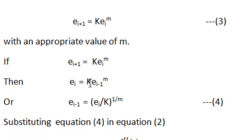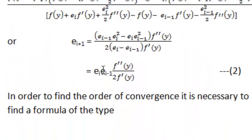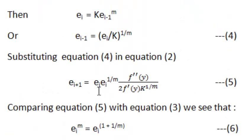From the previous equation we can write E of i minus 1 equals E_i divided by k, whole to the power 1 by m. This is equation number 4. On putting the value of E of i minus 1 from equation 4 into equation number 2, we obtain equation number 5, which says E of i plus 1 equals E_i into E_i to the power 1 by m, into f double dash y, divided by 2 f dash y into k to the power 1 by m.